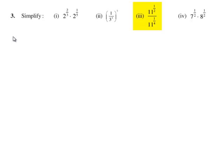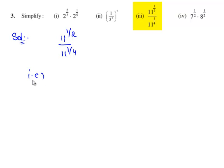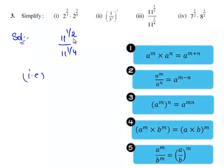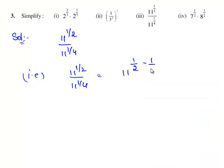Now let us move on to the third bit of the question. The third bit is: simplify 11 raised to the power of 1 by 2 divided by 11 raised to the power of 1 by 4. As we know, when we divide two exponents with like bases we subtract their powers. So this can be written as 11 raised to the power of 1 by 2 minus 1 by 4.